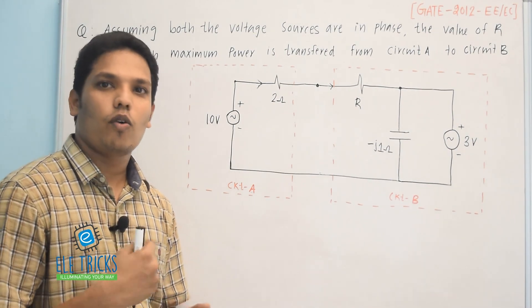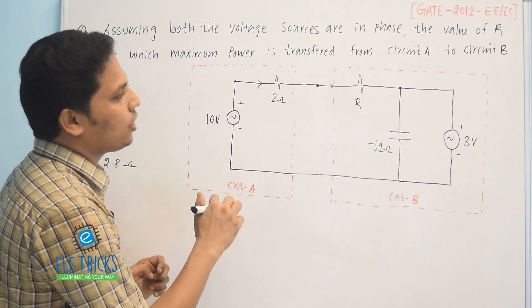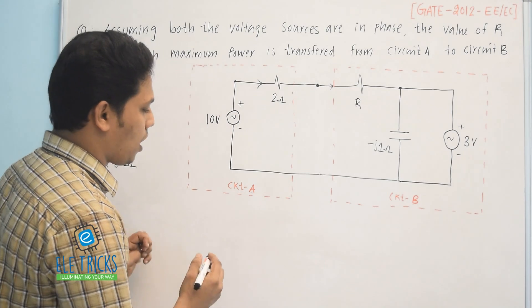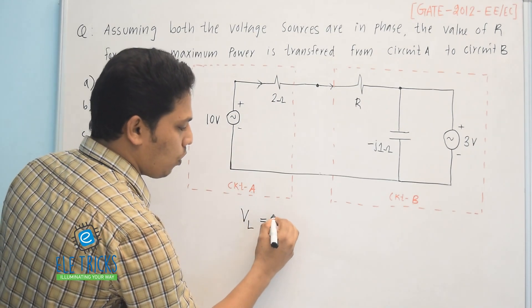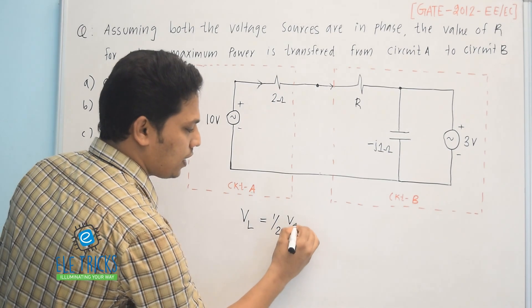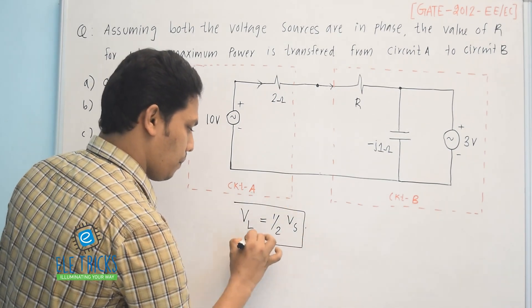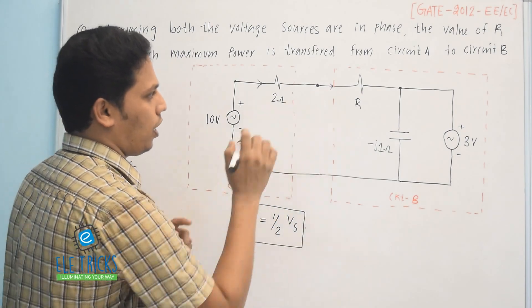In our previous video, we already found that a condition for maximum power transfer theorem is if the load voltage should be equal to half of the supply voltage. I am applying this equation here.